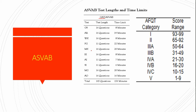The AFQT is not calculated based on all subtests. Rather, it's calculated based on your performance on the arithmetic reasoning, word knowledge, paragraph comprehension, and mathematical knowledge subtests. My advice is to focus 100% of your efforts on these four subtests. As a rule of thumb, you want to score in at least category 3B or above — that is, between 31 and 99.